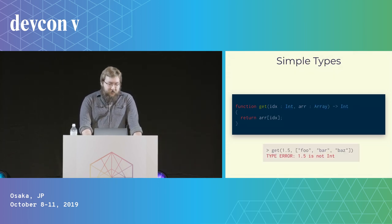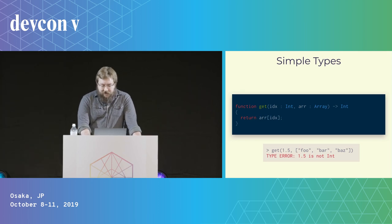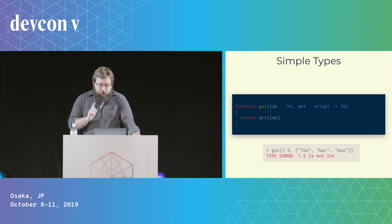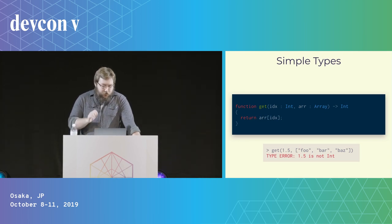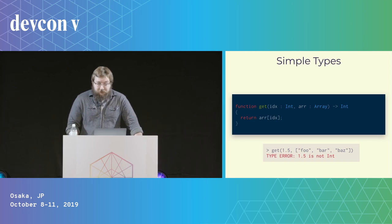By adding some types, we can get the compiler to complain: 'Hey, fix your code. You can't have an index that's not an integer.' This error might look deceptively similar to the previous one, but there's one crucial difference — it occurs before your code runs.